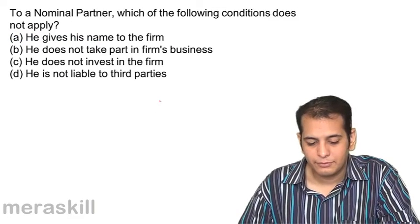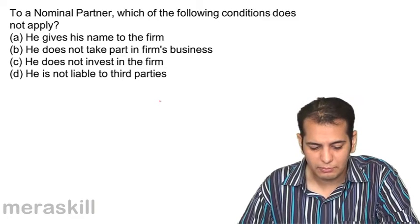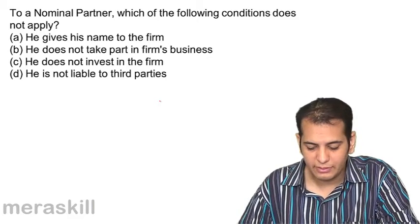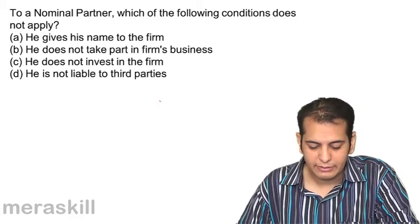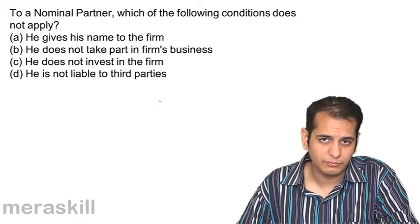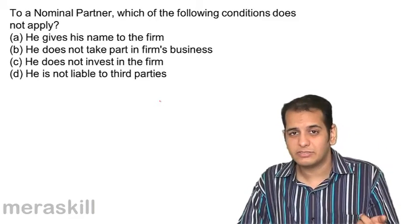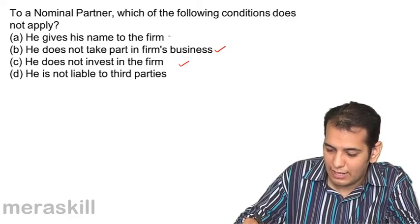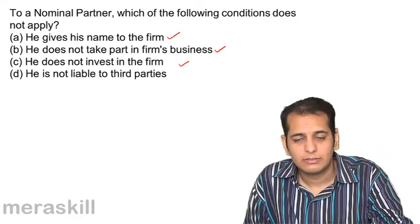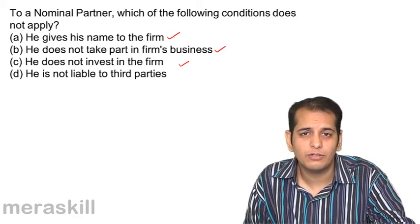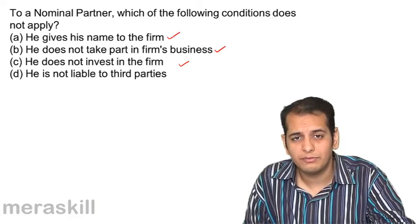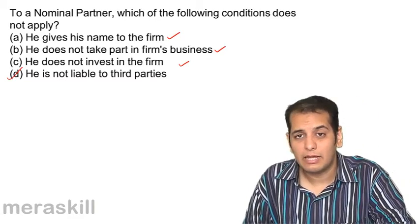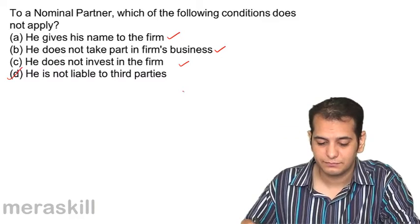Next: to a nominal partner, which of the following conditions does not apply? A. He gives his name to the firm. B. He does not take part in the firm's business. C. He does not invest in the firm. D. He is not liable to the third parties of the firm. A nominal partner does not invest in the firm, does not take part in the firm — these are correct — and he gives his name to the firm. But because he gives his name to the firm, if defective goods are given to customers, he will be liable to the outsiders, third parties.